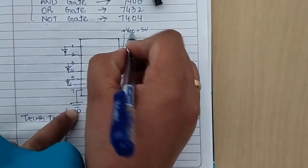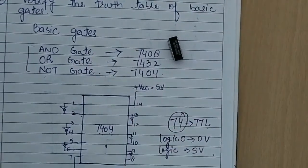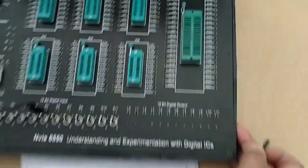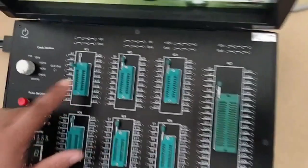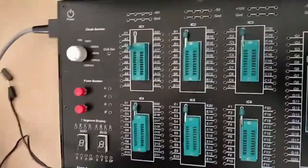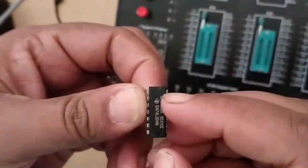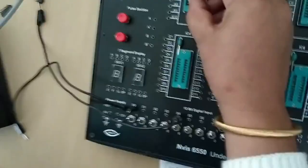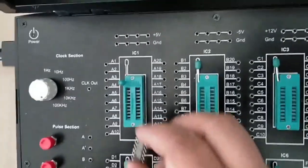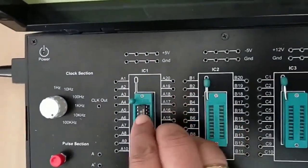This is your digital trainer kit which has many IC holders. I will use this IC holder to insert this IC with the notch in the upper direction. You can see here we have a notch. First you have to unlock this latch, then insert it and lock it again.